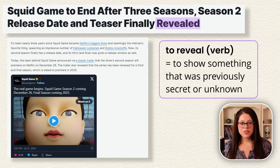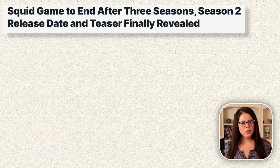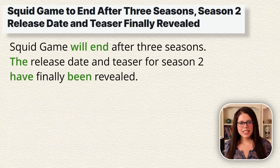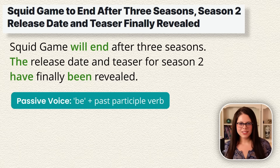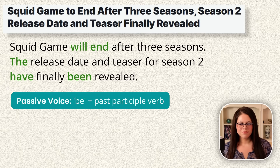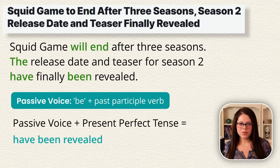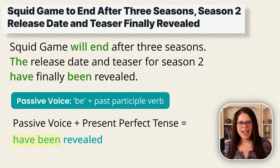To reveal something means to show something that was previously secret or unknown. A complete sentence would be: 'Squid Game will end after three seasons. The release date and teaser for season 2 have finally been revealed.' Notice that we're using the passive voice — the helping verb 'be' plus the past participle form of the verb 'revealed,' which becomes 'have been revealed' in the present perfect tense. But where are the helping verbs 'have' and 'be' in the headline? Let's talk about that next.